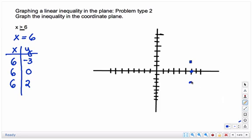This line is going to be a solid line because of the equal to part of your inequality. That means your solution could be a point on the line, or it could be in the shaded region.